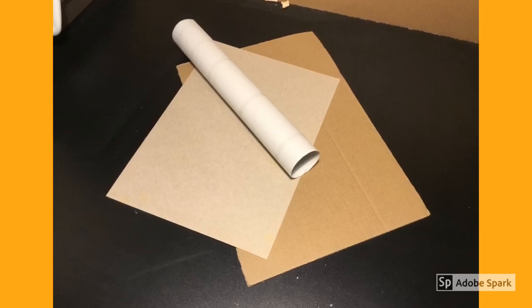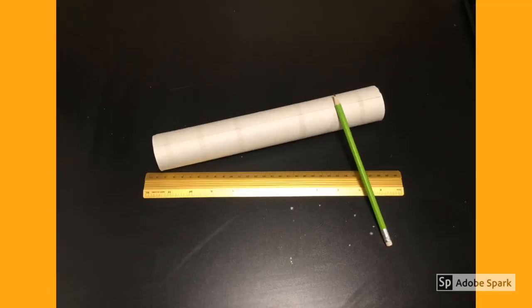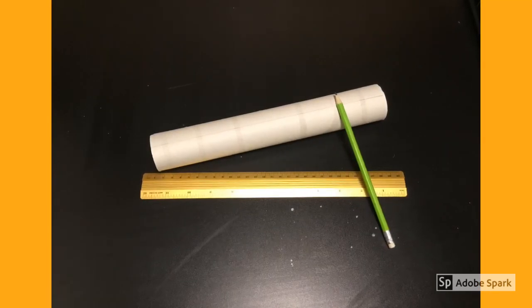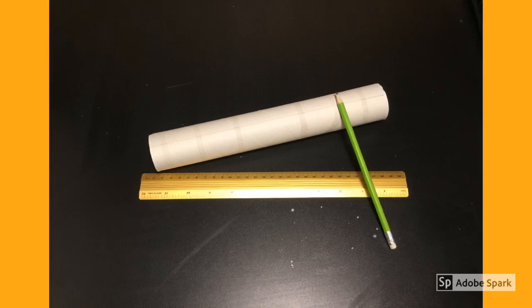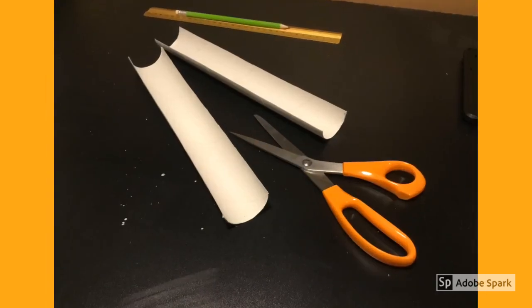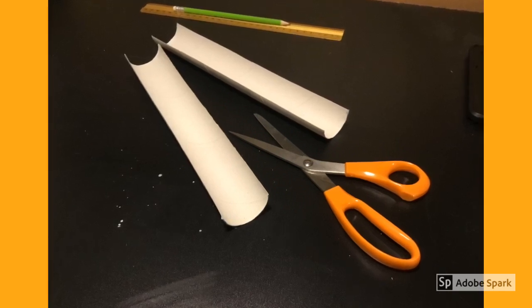Today we're going to make two types of ramps depending on the materials you have at your disposal. We'll first make a ramp out of a cardboard tube. Visually divide the tube in half and create a line on each side. Cut the tube into two equal portions and there we go, we have our first two ramps.